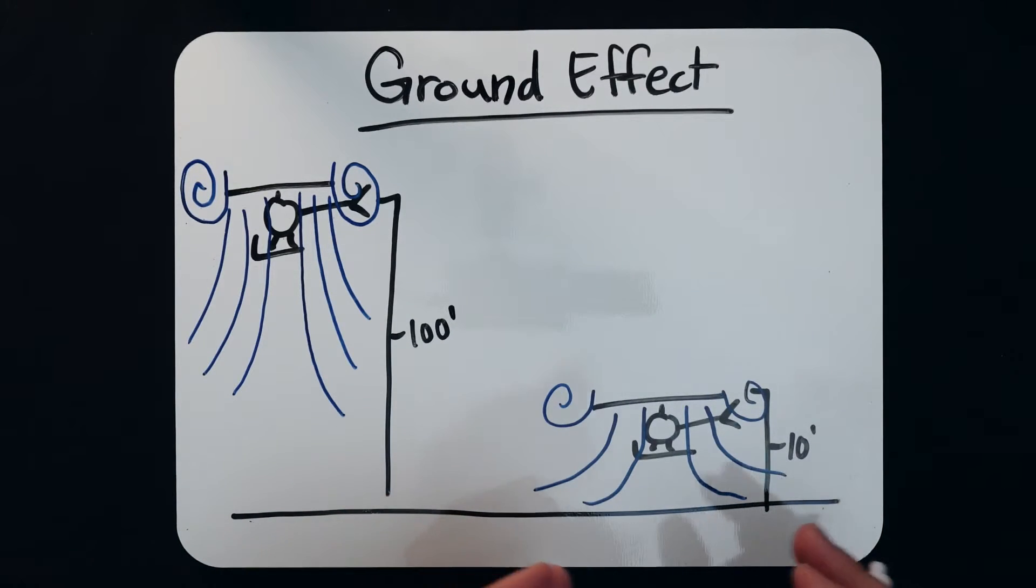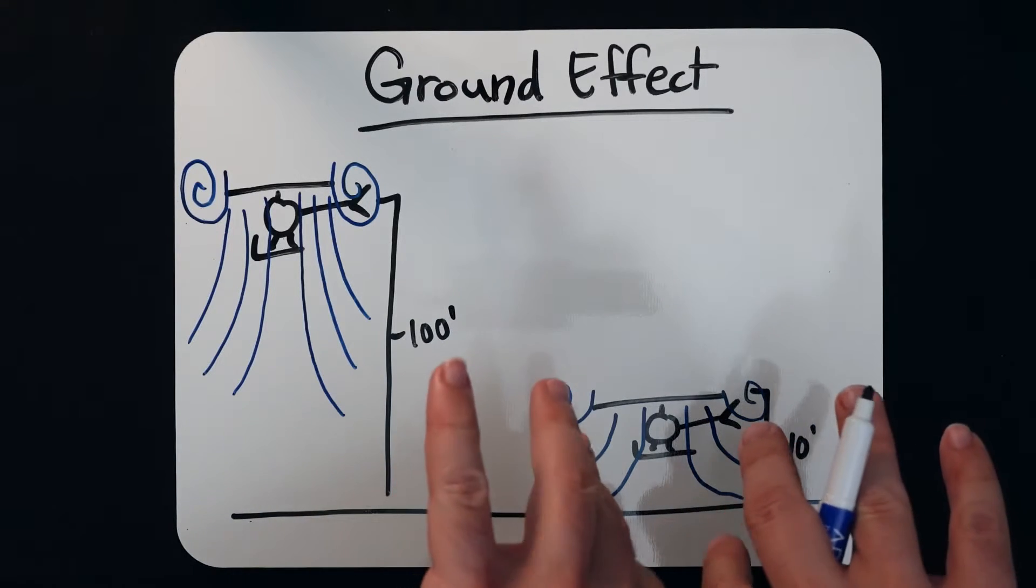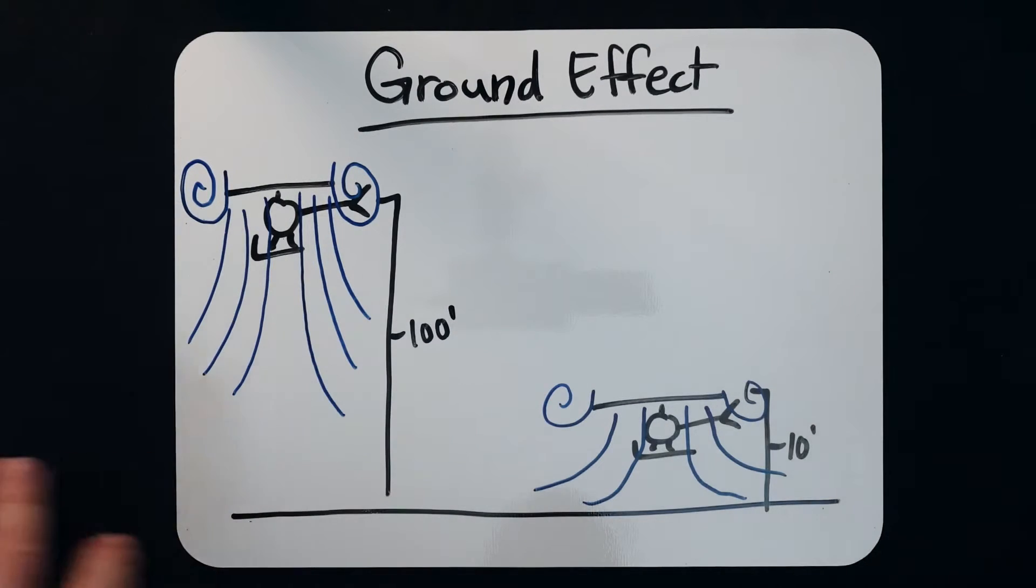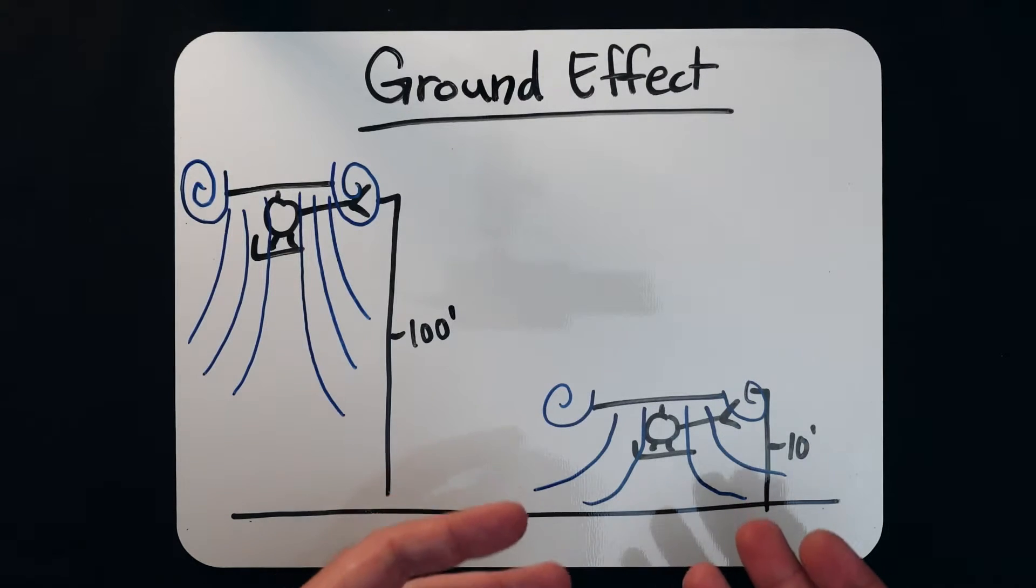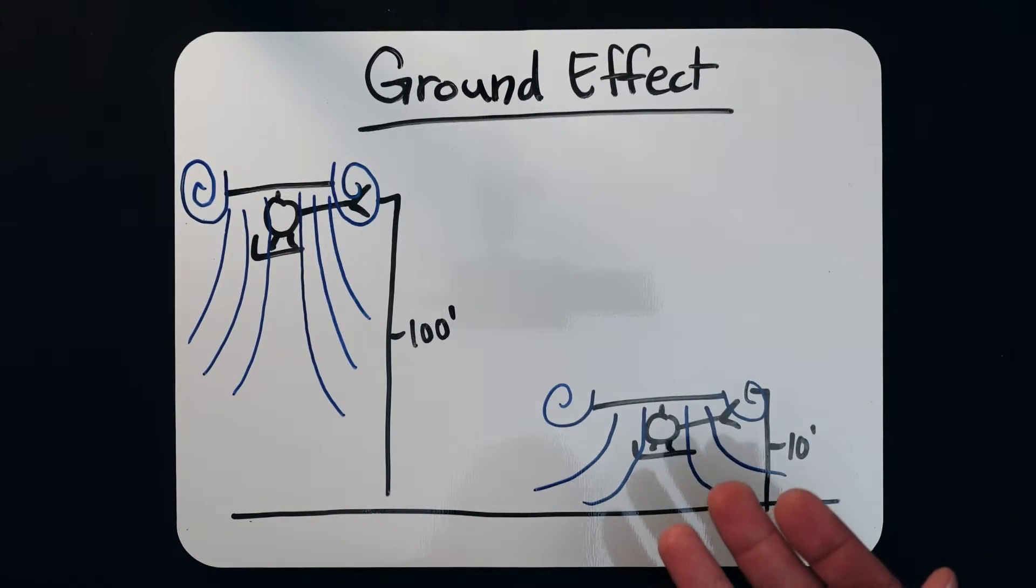So you'll notice this effect if you're standing near a helicopter at a hover. This air is getting pushed out in all directions away from the helicopter and you will feel it. If you watched the previous lesson, you've already got a pretty good idea about why we have that increased efficiency here in ground effect.